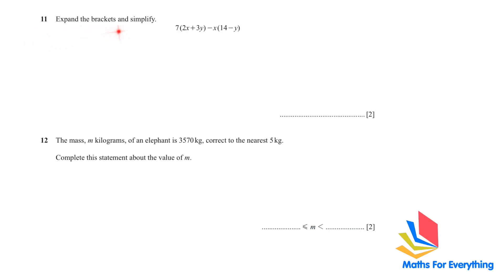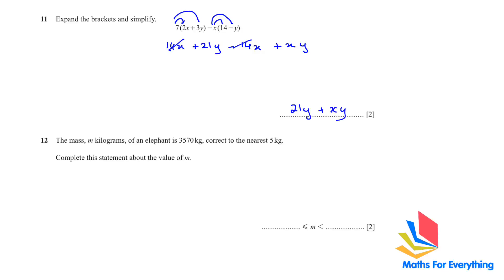Question 11: expand the brackets and simplify. 7 × 2x = 14x and 7 × 3y = 21y. Then −x × 14 = −14x and −x × −y = +xy. Looking for like terms: 14x − 14x cancels, leaving 21y + xy.